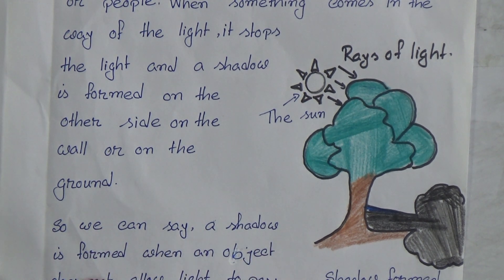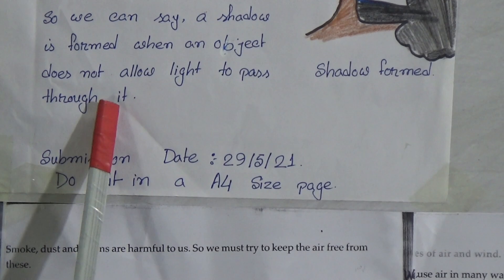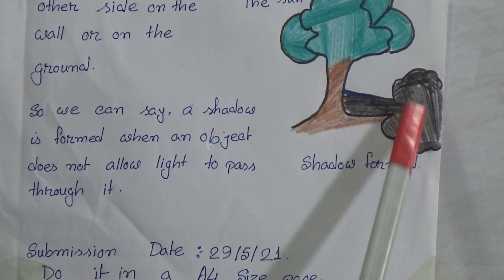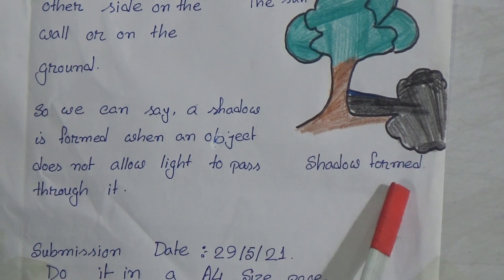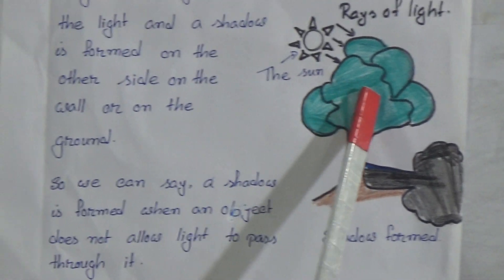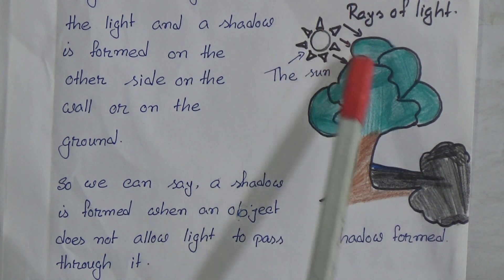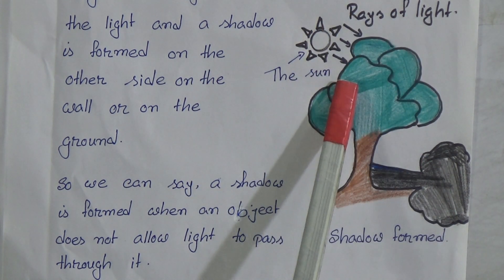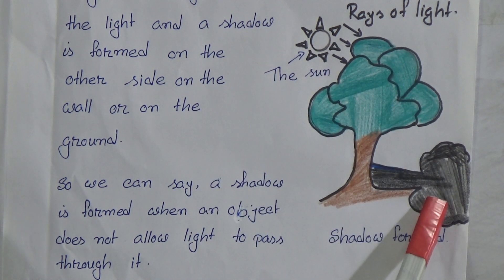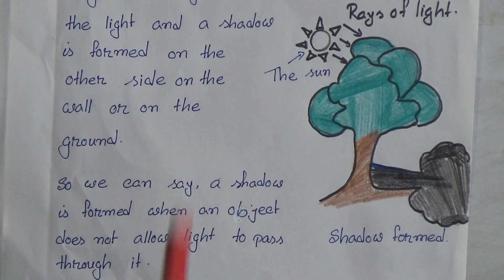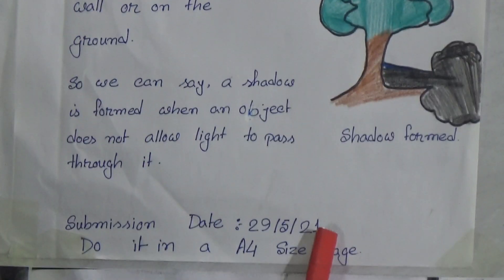So we can say a shadow is formed when an object does not allow light to pass through it. Here is a picture of a tree and its shadow. When sunlight falls on the tree, a shadow is created on the ground. Here are the rays of the sunlight and the shadow created on the ground. This is your assignment — do it on A4 size offset paper. Submission date: 29th May 2021.